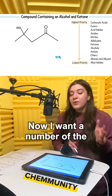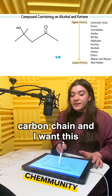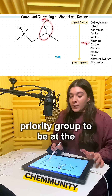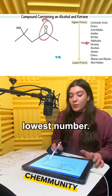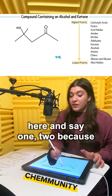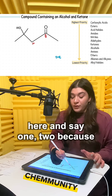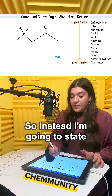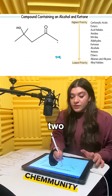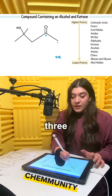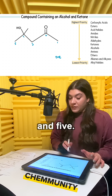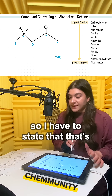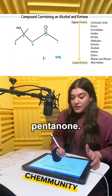Now I want to number the carbon chain, and I want this ketone, because it has the highest priority group, to be at the lowest number. So I'm not going to start here and say one, two, because there is a carbon here. So instead, I'm going to state this is one, two, three, four, and five. I know there are five carbons, so I have to state that that's pentanone.